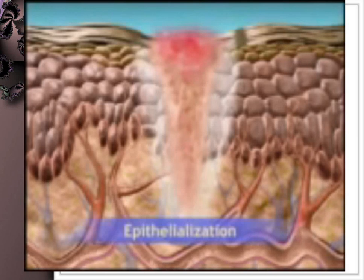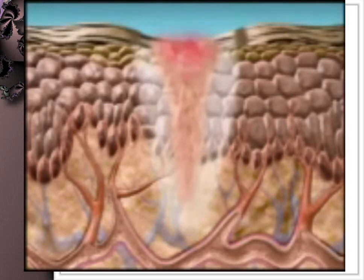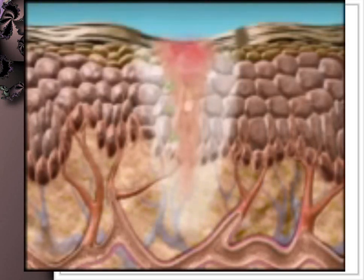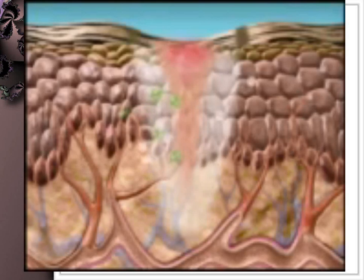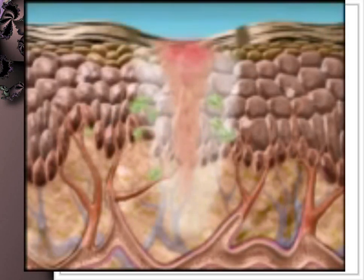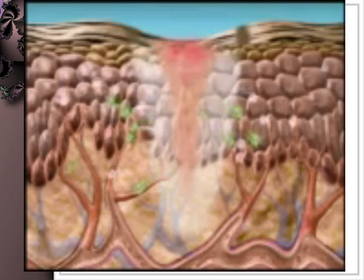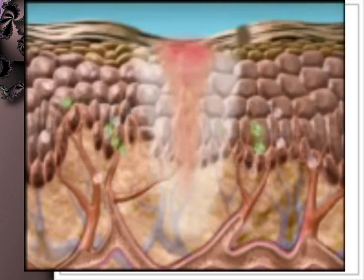The final component of the proliferative stage is epithelialization — the regeneration, migration, proliferation, and differentiation of epithelial cells at the wound's edge to form a new surface area similar to that destroyed by the injury. By the end of the proliferative stage, white blood cells leave the wound site, edema diminishes, and the wound begins to blanch as the small blood vessels become thrombosed and degenerate.